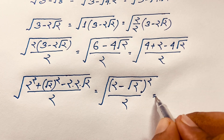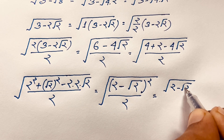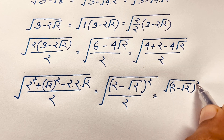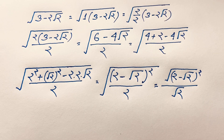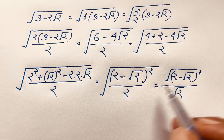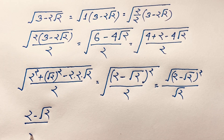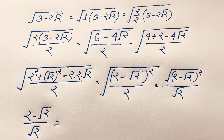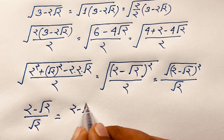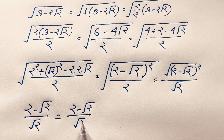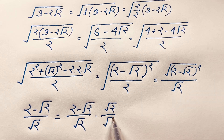The square root and the square cancel each other, giving us (2 minus square root of 2) over square root of 2. To simplify, we multiply numerator and denominator by square root of 2: (2 minus square root of 2) times square root of 2, all over square root of 2 times square root of 2.